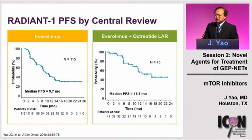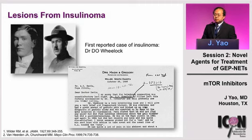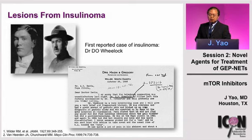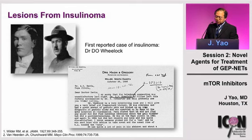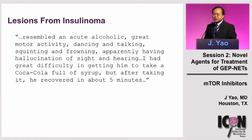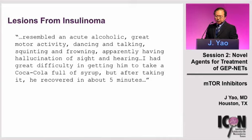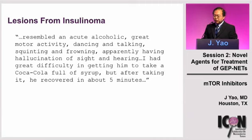From these earlier studies, we had hints that this class of drugs may have special activity in insulinomas. This is the very first description of an insulinoma, published in JAMA in 1927. The patient was an orthopedic surgeon named Dr. Wheelock, and the referral note from his physician to the Mayo Clinic described a classic presentation of malignant insulinoma — the patient was described as resembling an acute alcoholic with great motor activity, dancing, talking, and having hallucinations.